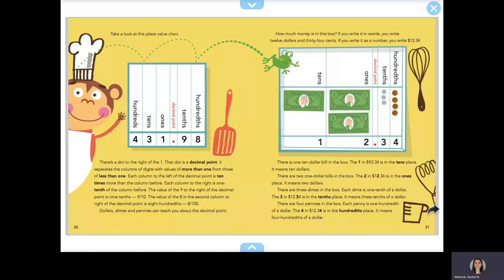Dollars, dimes, and pennies can teach you about the decimal point. How much money is in this box? If you write it in words, you write 12 dollars and 34 cents. If you write it as a number, you write $12.34, or 12 dollars and 34 cents.